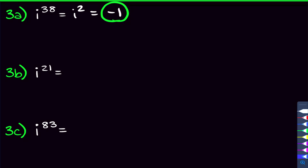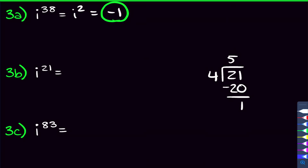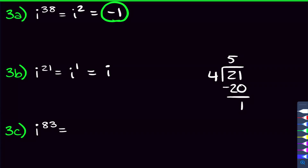For problem 3b, i to the 21st power: 4 goes into 21 five times (4 × 5 = 20), leaving a remainder of 1. So i to the 21st acts the same as i to the first power, which is just i. That's the answer for 3b.